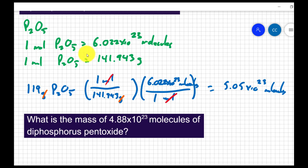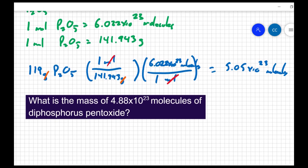We know that one mole of diphosphorus pentoxide contains Avogadro's number of molecules. We also know that one mole of diphosphorus pentoxide has a mass of 141.943 grams from looking at the periodic table. So I'm going to use that same information to solve this problem.